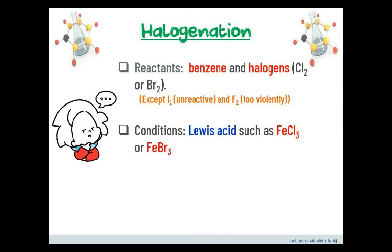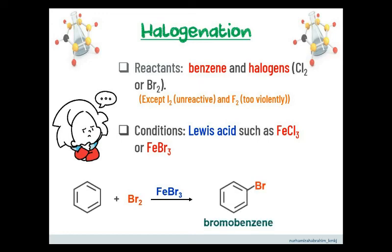For example, when benzene reacts with bromine gas in the presence of iron(III) bromide, the products formed are bromobenzene, where one of the hydrogens is replaced by one bromine, and hydrogen bromide, where the hydrogen from benzene bonds with the leftover bromine atom from bromine gas.